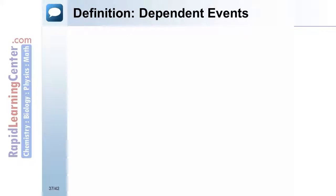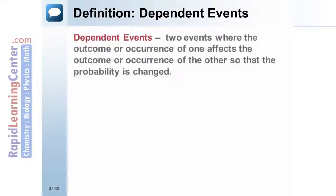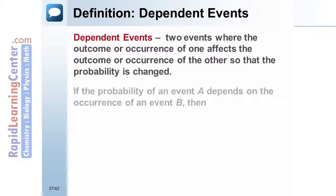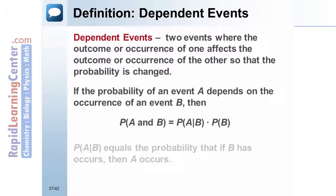Dependent Events. Two events are dependent if the outcome or occurrence of one affects the outcome or occurrence of the other so that the probability is changed. Theorem: If the probability of an event A depends on the occurrence of an event B, then the probability of A and B equals the probability that if B occurs, then A occurs, times the probability of B.